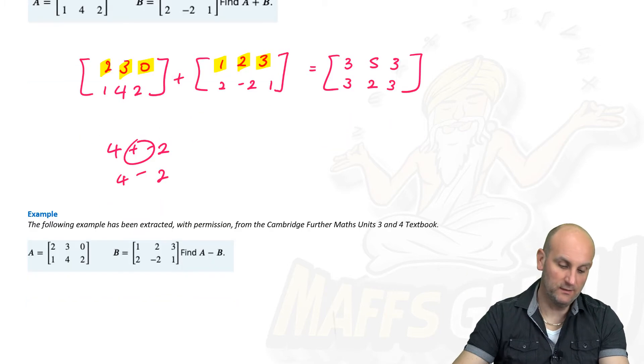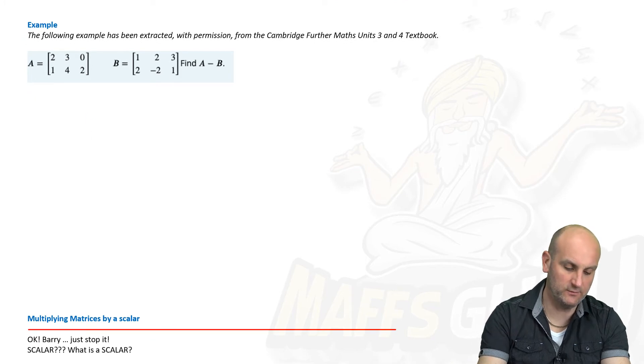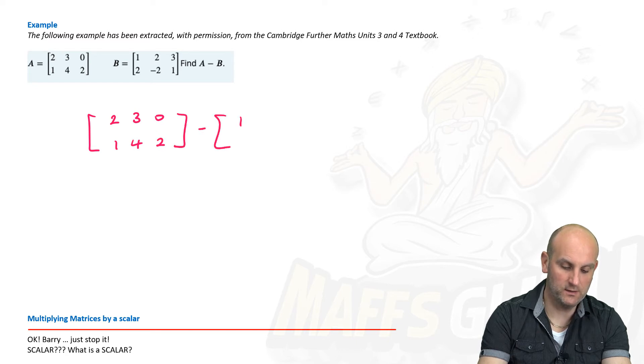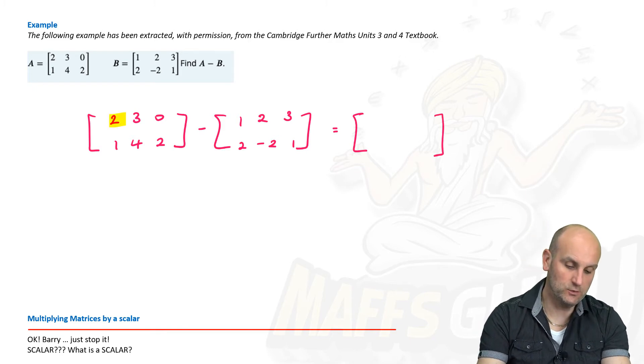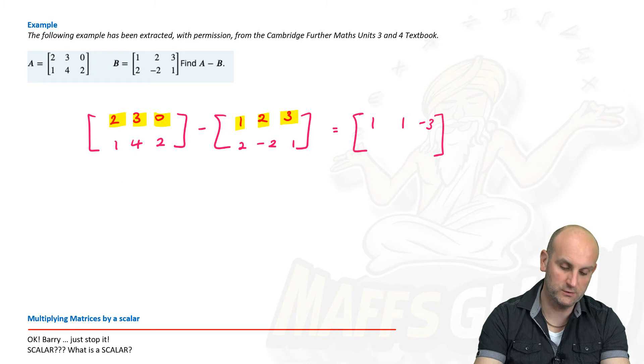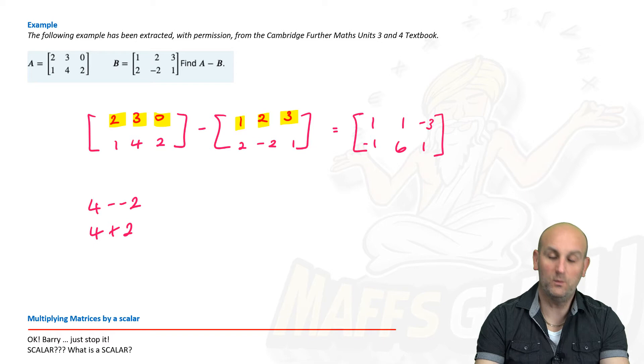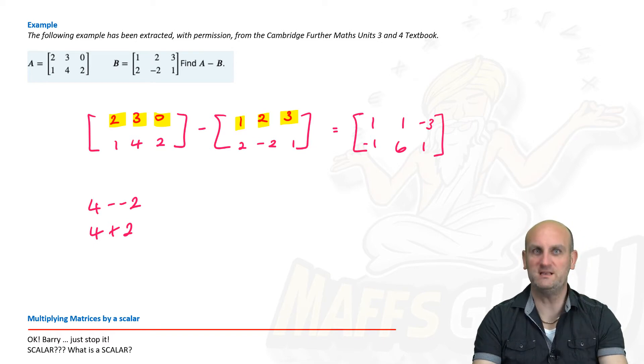And I can now do the bottom row. Now, notice again, I tend to work along the rows first. And then it just makes life easier. So, 1 plus 2 gives me 3. 4 plus minus 2. A plus and a minus is a minus. So, that's 4 minus 2, which gives me 2. And 2 plus 1 gives me 3. Job done. There we go. Nothing more to it. The following example is now asking us to subtract said matrices.